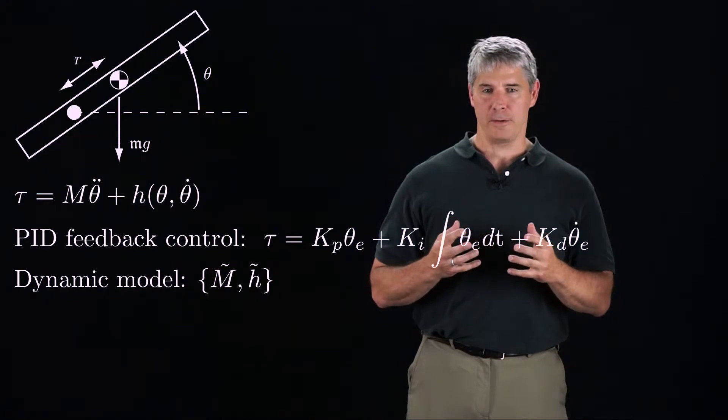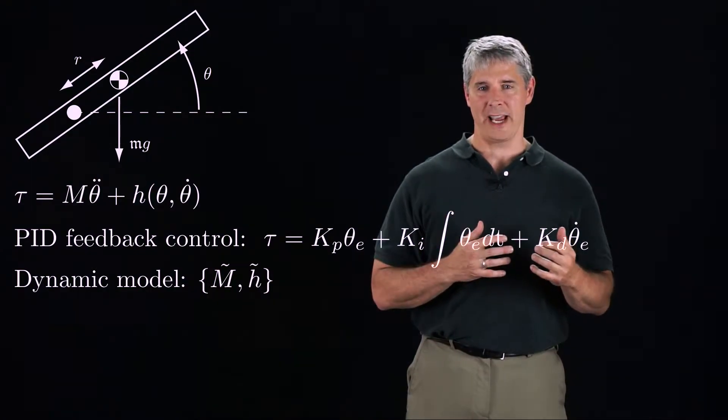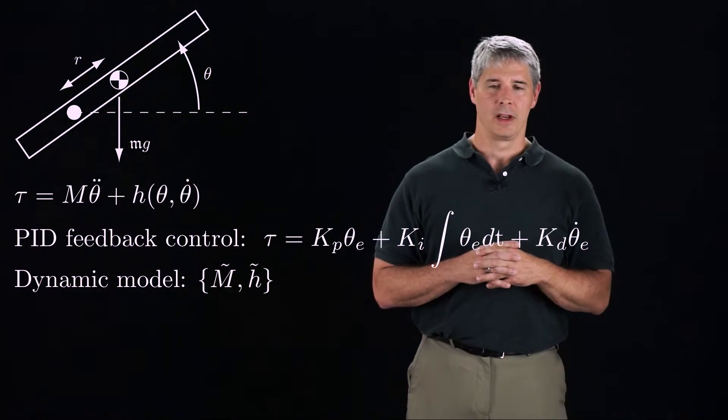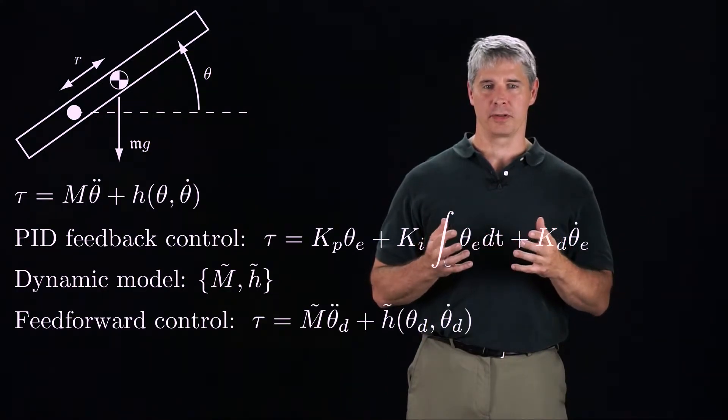If the model is perfect, then M tilde equals M and H tilde equals H at all times. With our dynamic model, we can design a feedforward controller.